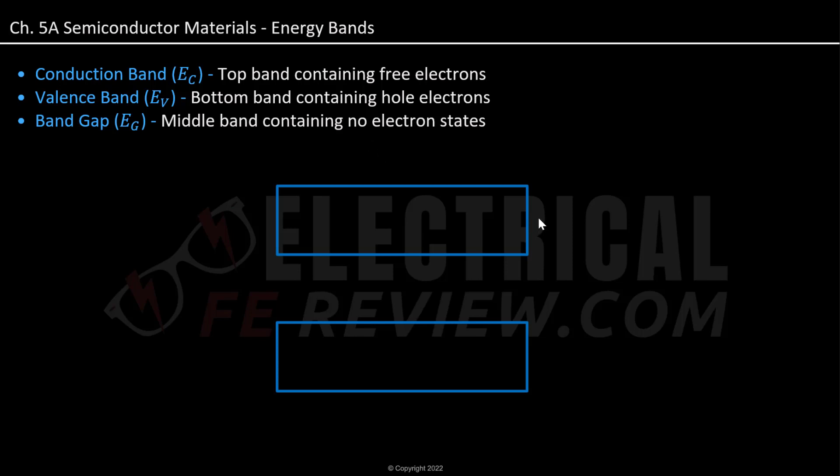So if we want to look at this, our top band, EC, has free electrons, which are those that are not attached to the nucleus of an atom.